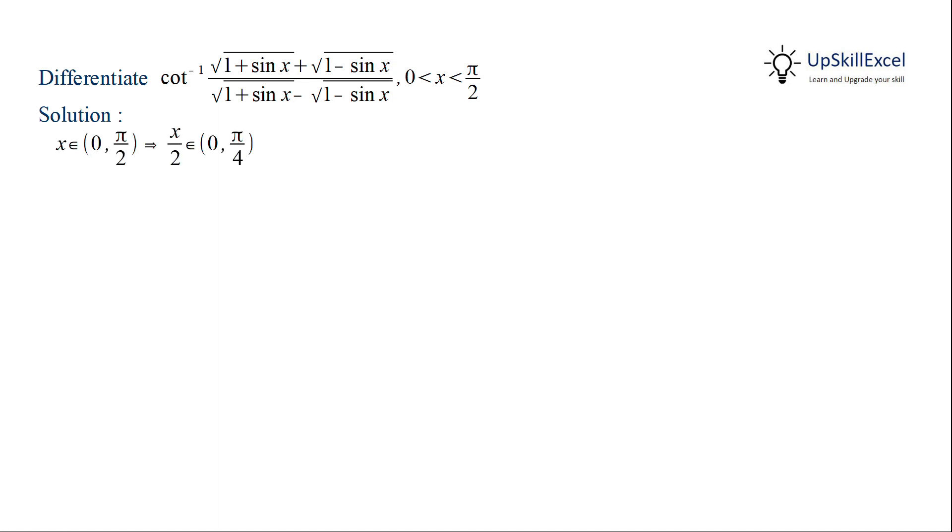Now x belongs to 0 to π by 2, which implies that x by 2 belongs to 0 to π by 4, and in this domain we can clearly see that cos x by 2 is always greater than sin x by 2.